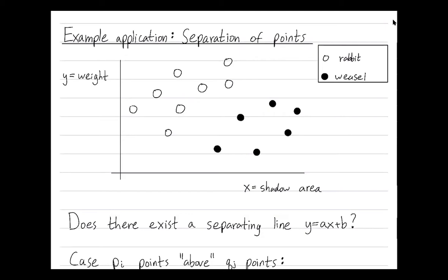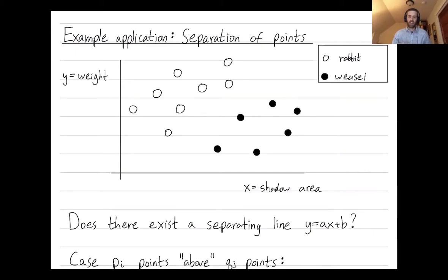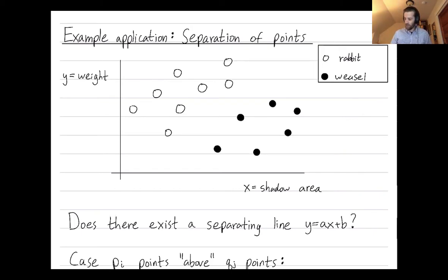Our book gives this example of rabbits and weasels. They have a trap that catches rabbits or weasels and we're trying to decide if there's a way to separate the caught animals into the rabbits and the weasels. Each animal has a weight measured by the variable y, and each animal also has a surface area or shadow area, represented by the horizontal axis x. As you can see, the points are linearly separable.